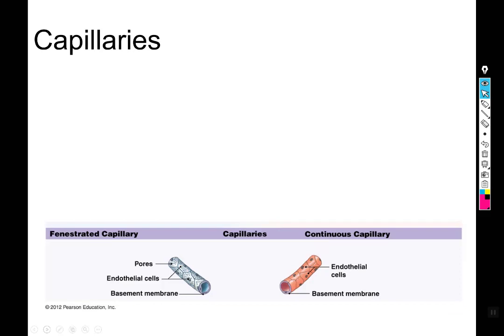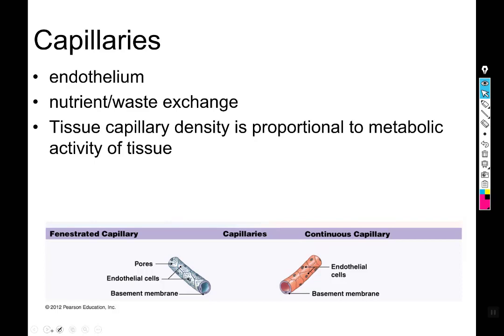Capillaries are tiny, relatively simple compared with the multi-layered structure of larger arteries — essentially just a tube made of endothelium, which can be continuous, fenestrated, or sinusoidal, reflecting their degree of permeability. Capillaries are the site of nutrient and waste exchange: oxygen leaves arterial blood and enters tissues, while wastes like urea and creatinine are incorporated into the blood so veins can carry them through the liver and back to the heart.